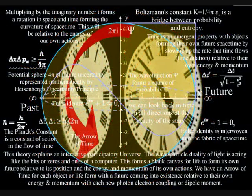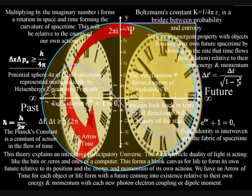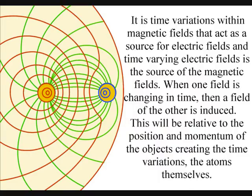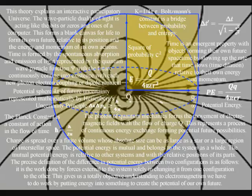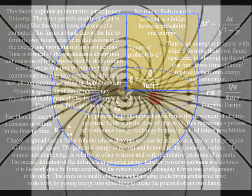Multiplying by the imaginary number i is a rotation, with the imaginary numbers always being at right angles to the real numbers. In this theory, this is because electromagnetic fields are always at right angles to each other.